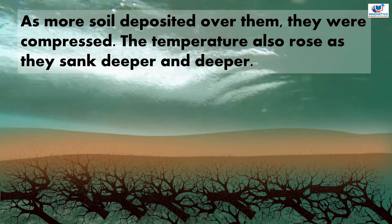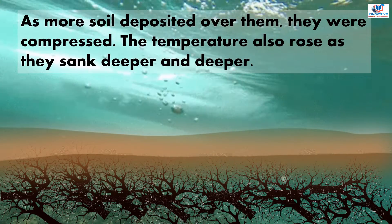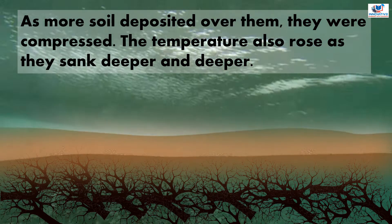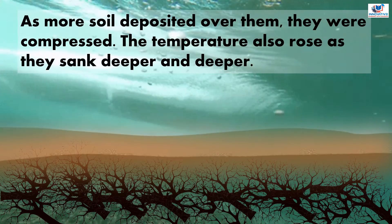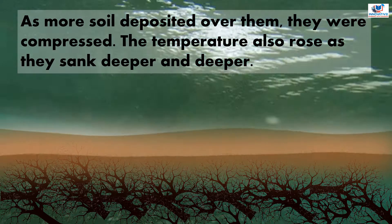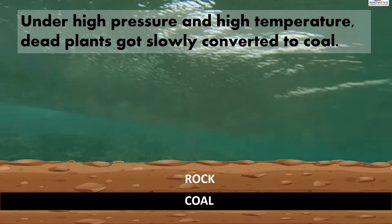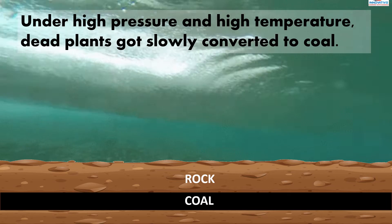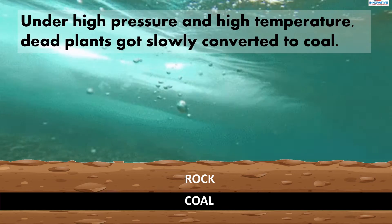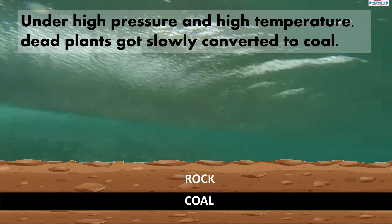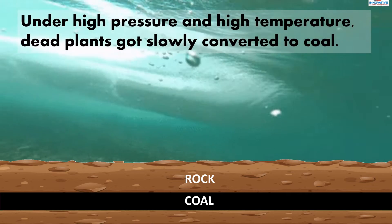As more soil deposited over them, they were compressed. The temperature also rose as they sank deeper and deeper. Under high pressure and high temperature, dead plants got slowly converted to coal.